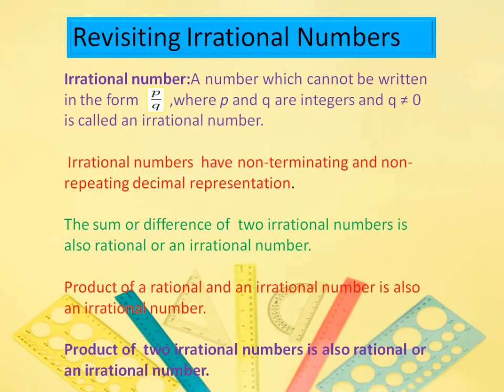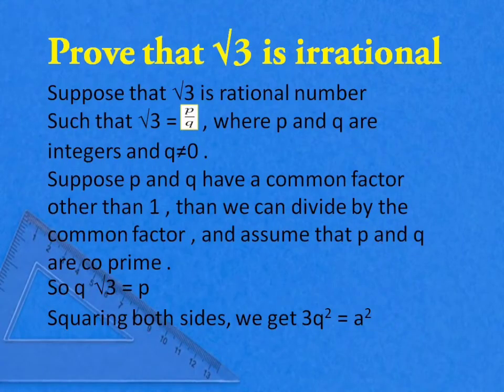A number which cannot be written in the form P by Q and Q is not equal to 0. Irrational numbers have non-terminating and non-repeating decimal representation. Sum or difference of 2 irrational numbers is also a rational or irrational number, and the product of 2 rational numbers is a rational number.